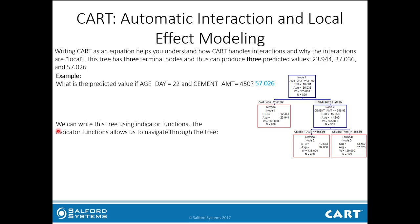As described in the previous video on how to write a decision tree as an equation, we can write this tree using indicator functions. Indicator functions allow us to navigate through the tree, and they're defined as: i(x) equals 1 if x is true, and 0 if x is false.